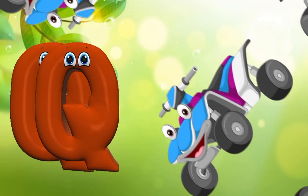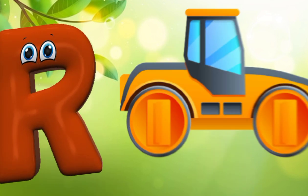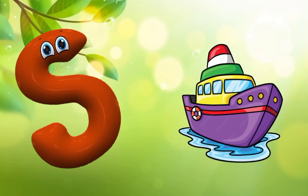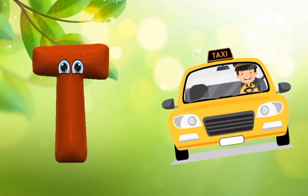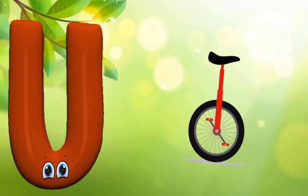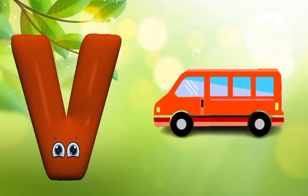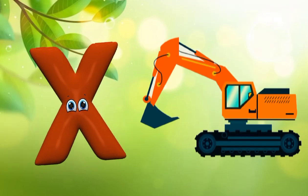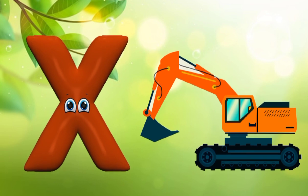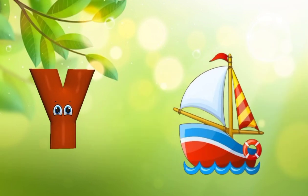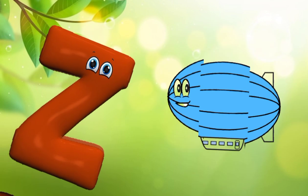Q is for quad bike, quad bike. R is for road roller, road roller. S is for ship, ship. T is for taxi, taxi. U is for unicycle, unicycle. V is for van, van. W is for water tanker truck, water tanker truck. X is for excavator, excavator. Y is for yacht, yacht. Z is for zeppelin, ze, zeppelin.